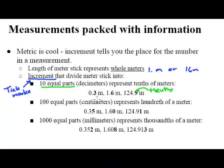For example, if we have ten equal parts, we call that the decimeter, and that belongs in the tenths place. For example, 0.3 meters, 1.6 meters, 124 whole meters. But then, in addition, a 0.9 or a tenth of a meter.